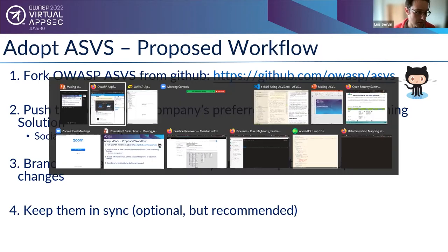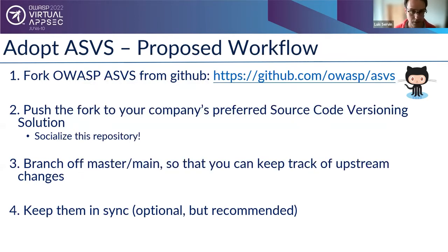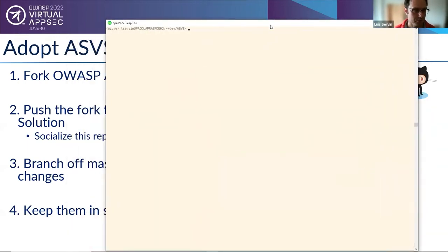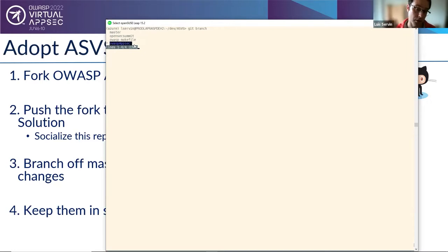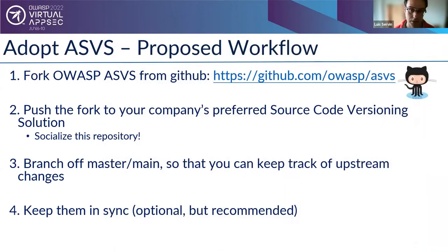Let me go to the repository to show you. I've made a couple of branches for the purpose of this talk. I branched off master to create an 'OWASP AppSec' branch. Within that branch I'm working right now, and I'll be modifying the file on the fly to show how we can adapt it — which I think is the most exciting part.